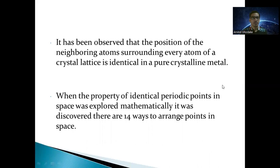It has been observed that the positions of the neighboring atoms surrounding every atom of the crystal lattice are identical in a pure crystalline metal. When the property of identical periodic points in space was explored mathematically, it was discovered there are 14 ways to arrange points in space.